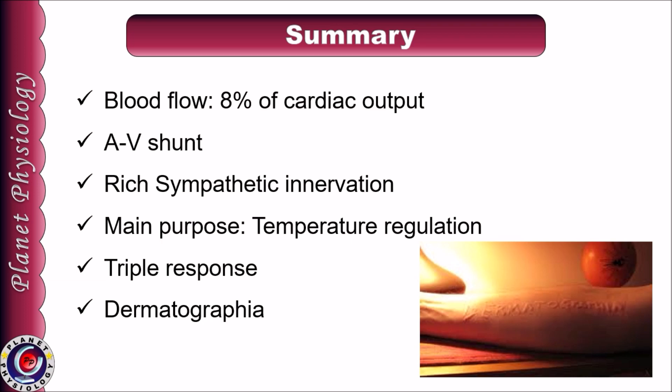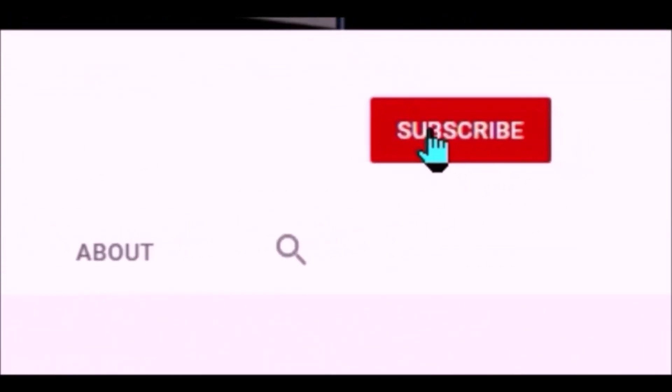To summarize: blood flow to the skin is about 8% of total cardiac output and can change drastically with thermoregulatory stimuli, mainly achieved through arteriovenous shunts and rich sympathetic innervation. Cutaneous blood flow is regulated to maintain body temperature — either to conserve or dissipate heat. Changes in cutaneous blood flow can be visualized as the triple response, consisting of red line, wheal, and flare. Excessive cutaneous response to injury is called dermatographia.